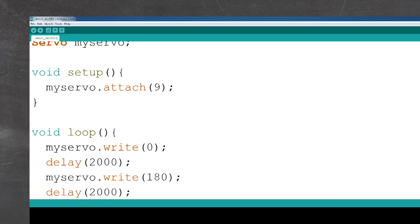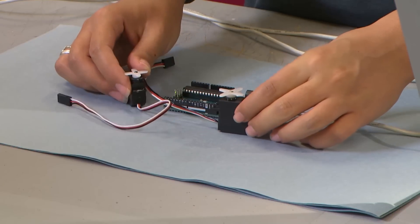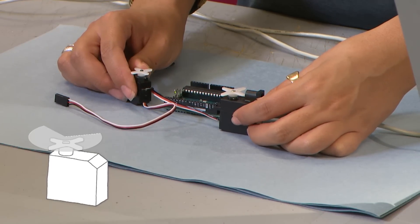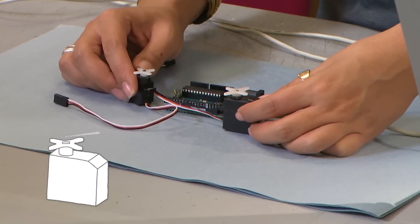Now, looking at our void loop, this essentially tells me that our big servo is going to spin to the left for 2 seconds, then to the right for 2 seconds, then to the left for 2 seconds, then to the right, and it keeps doing that.